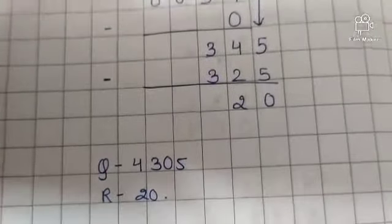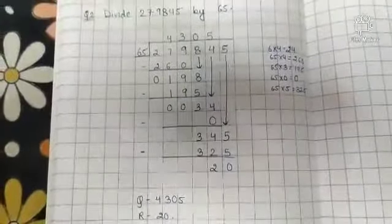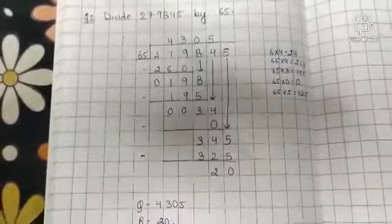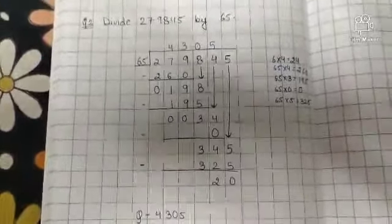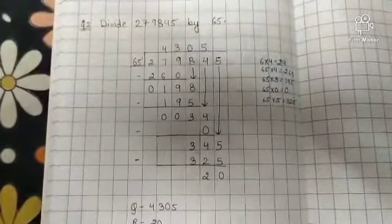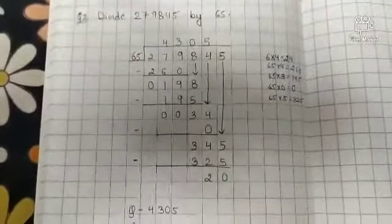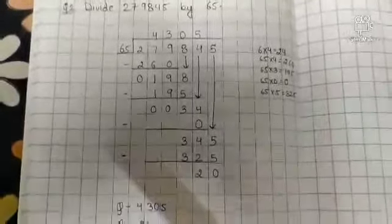So the quotient is 4305 and the remainder is 20. Okay, now note down this question.